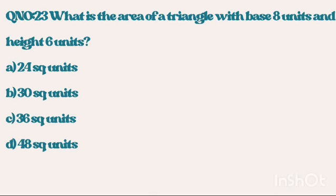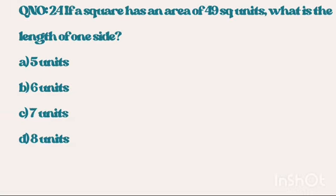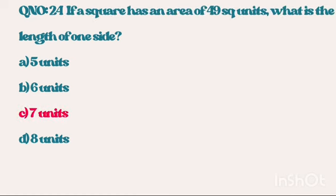Question number 23. What is the area of a triangle with base 8 units and height 6 units? The answer is 30 square units. Question number 24. If a square has an area of 49 square units, what is the length of one side? The answer is 7 units.